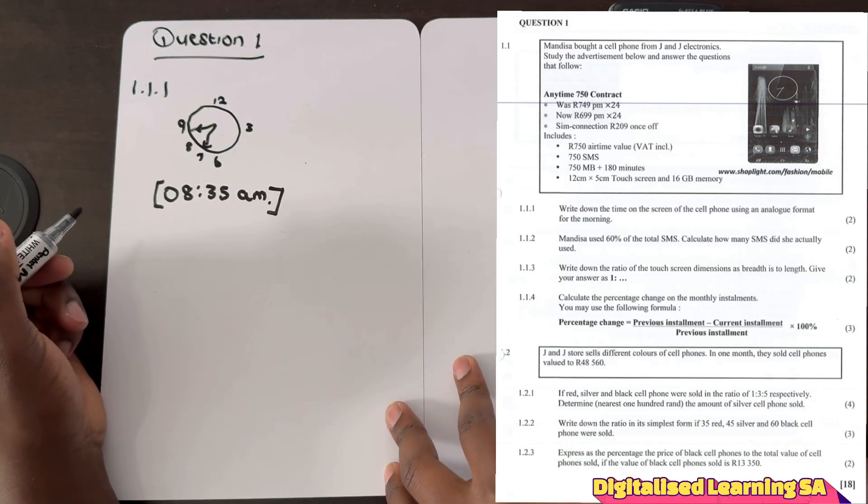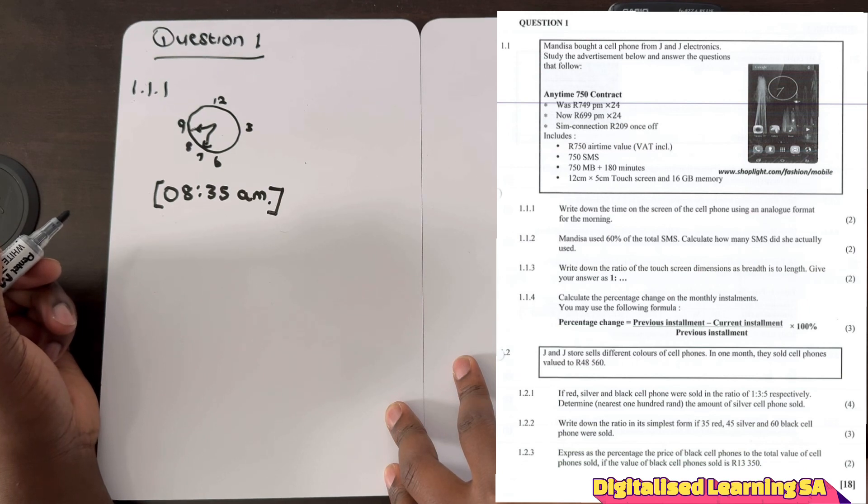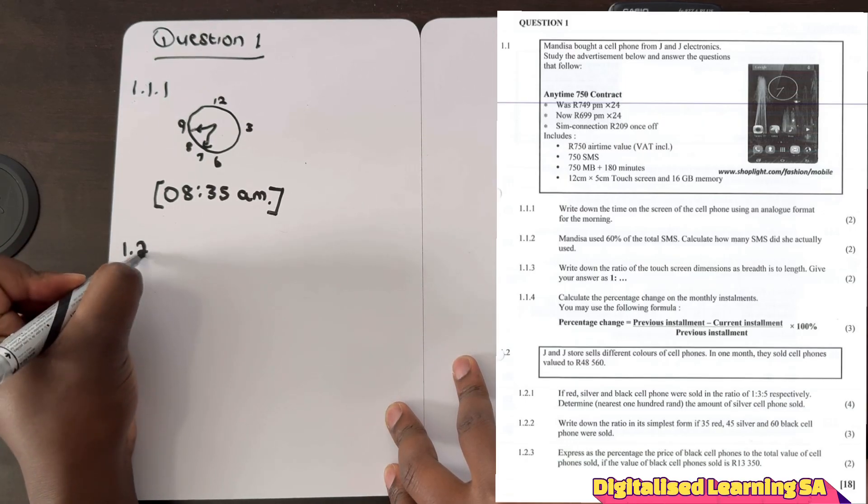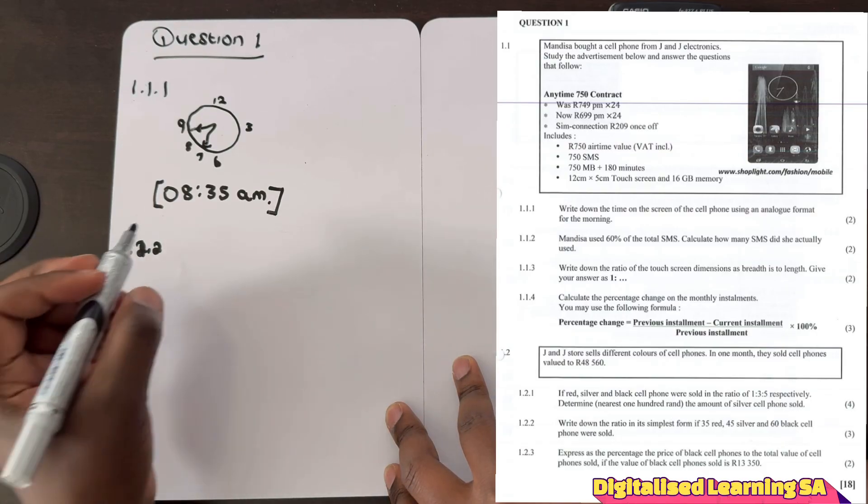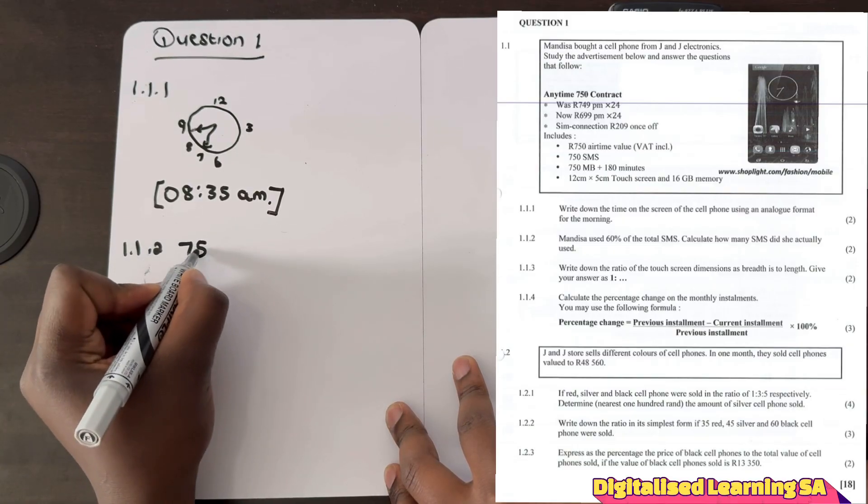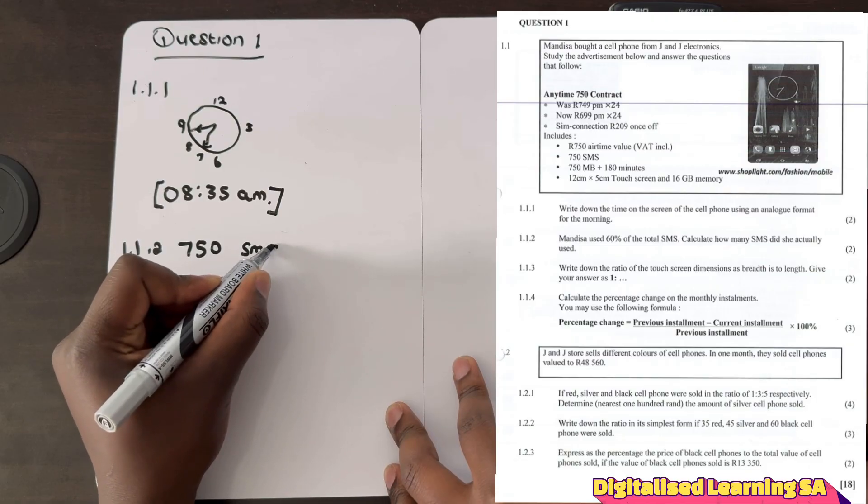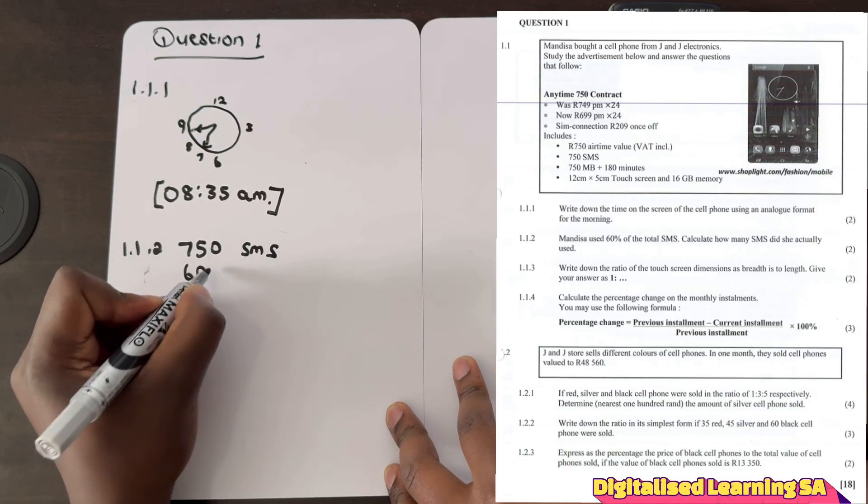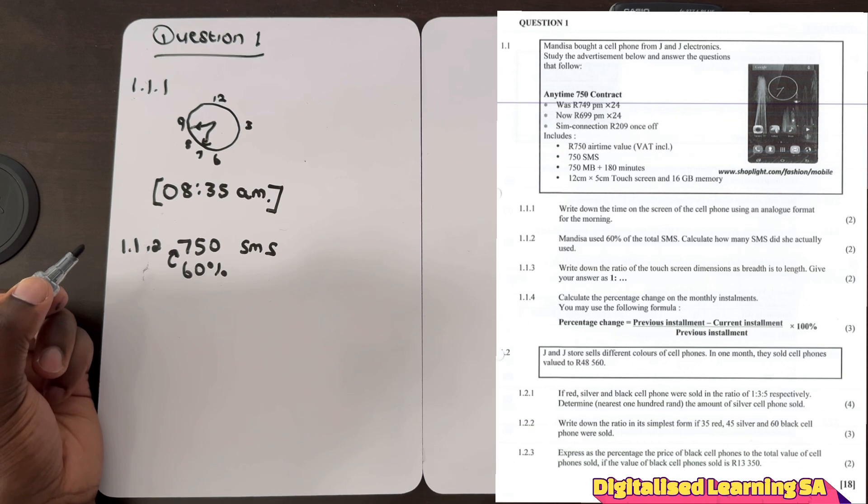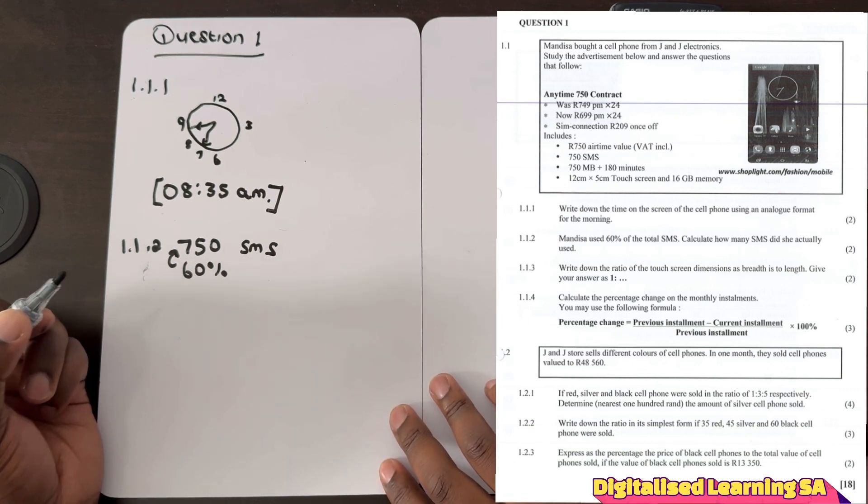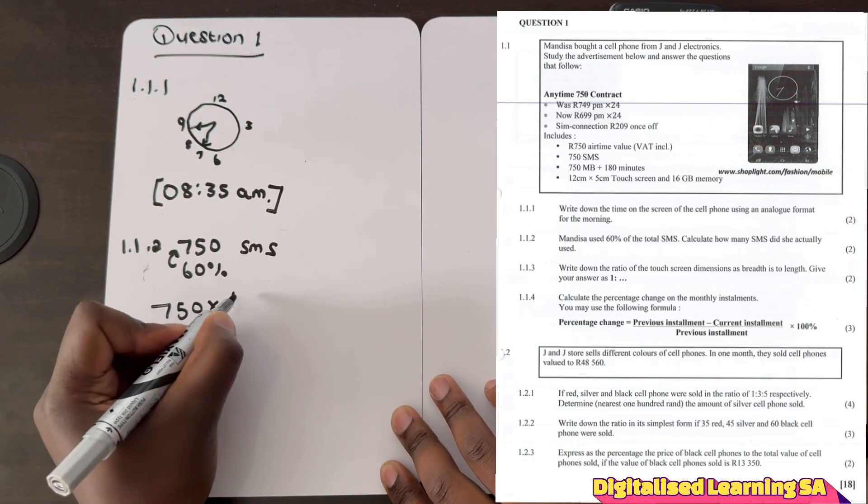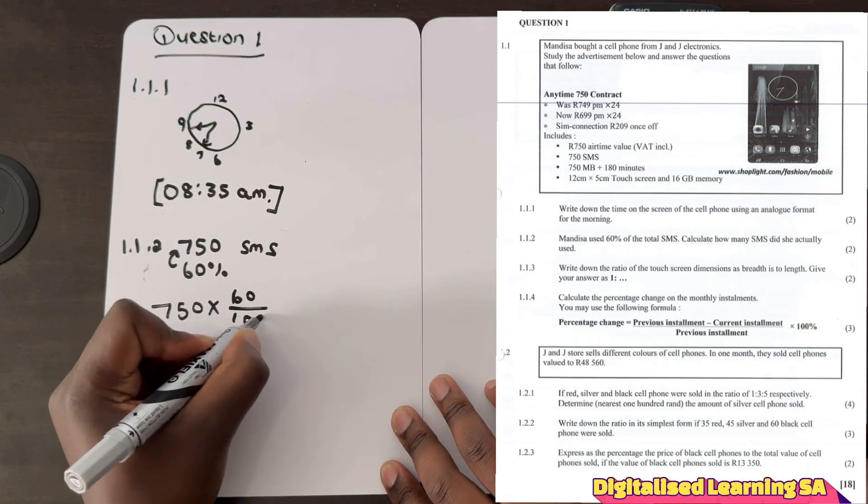And the second question is Mandisa used 60% of the total SMS, calculate how many SMS did she actually use. So to answer this question what we have to do is to take the 750 SMS. They are saying that she used up 60% of the 750. So to find out how many SMS she actually used we come and see 750 multiplied by 60 divided by 100.